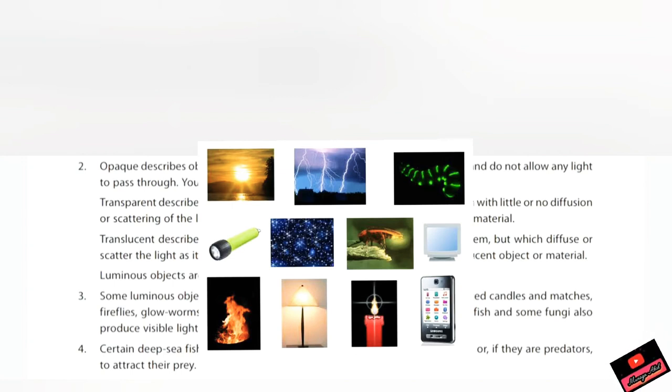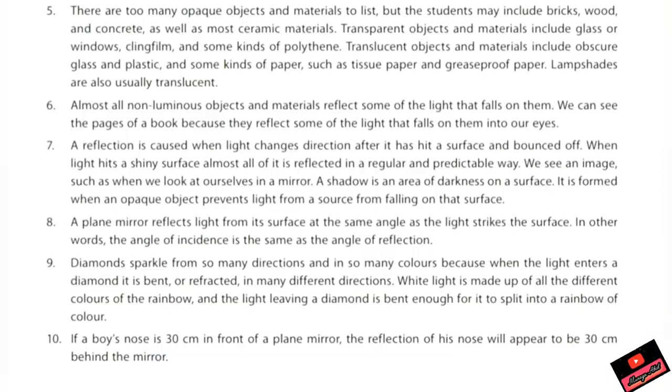Question number four answer is: certain deep sea fish and some insects are luminous. Here in this picture, glowworms are also shown, fireflies also shown. They are luminous either to attract a mate, or if they are predators, to attract their prey. Question number five answer is very easy for you.